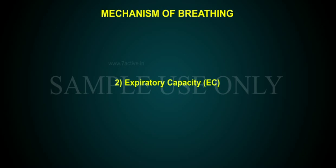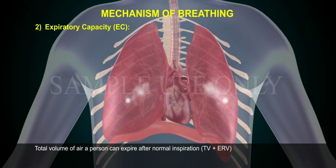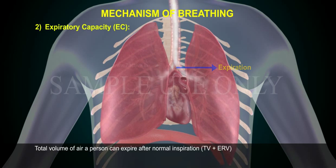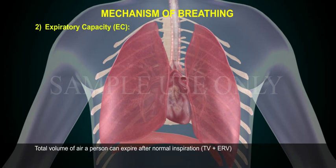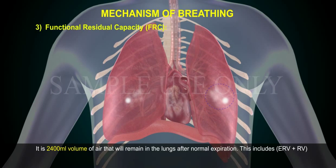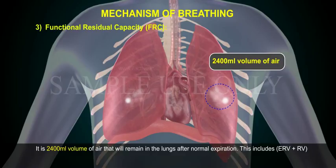2. Expiratory capacity (EC): Total volume of air a person can expire after normal inspiration (TV plus ERV). 3. Functional residual capacity (FRC): It is 2,400 ml — the volume of air that will remain in the lungs after normal expiration. This includes ERV plus RV.